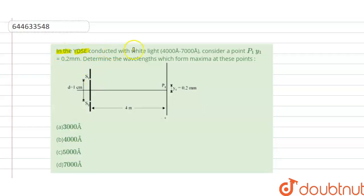In the YDSE conducted with white light (4000Å to 7000Å), consider a point P₁ at y₁ = 0.2 mm, and determine the wavelength for which maxima occurs at this point. Options A, B, C, D are given, so we have to find the maxima wavelength.